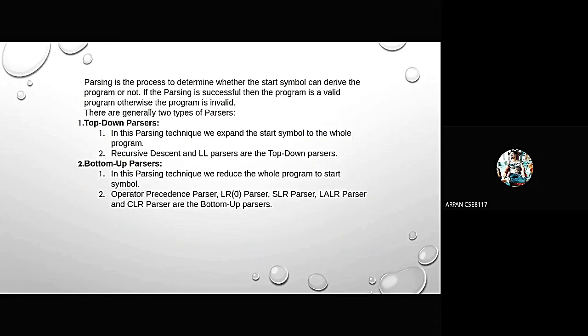There are two types of parser. In top-down parser, the technique we expand the symbol to the whole program. In bottom-up parser, the technique we use the whole program to start symbol. The types of top-down parser are recursive descent parser and LL parser. The types of bottom-up parser are LR0 parser, SLR parser, LALR parser and CLR parser.